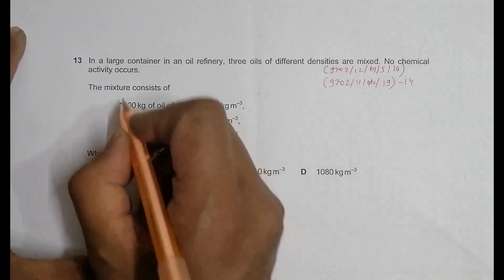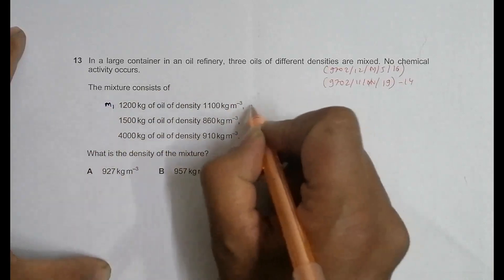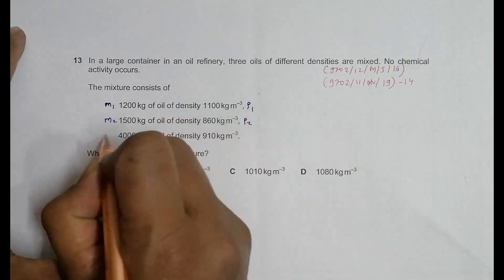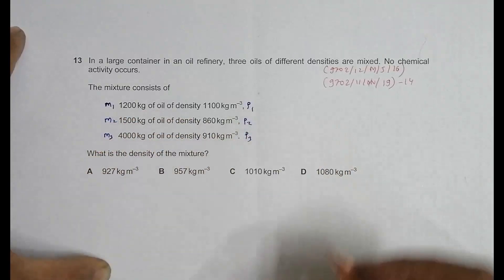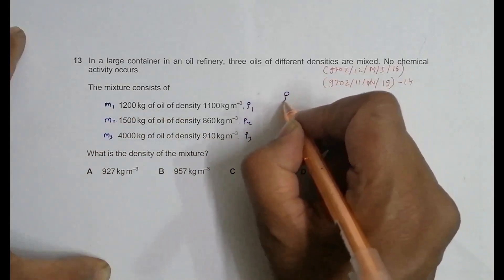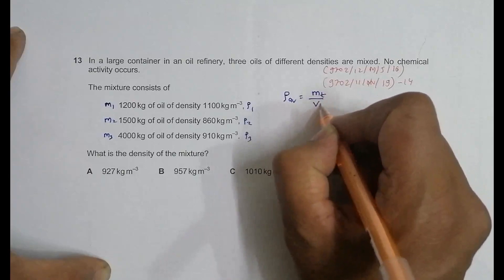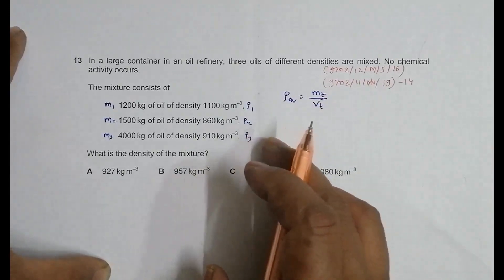So this is m1, this is ρ1, this is m2, this is ρ2, this is m3, and this is ρ3. Let's remember that the average density is equal to mass total by V total. So here we need to find mass total as well as V total.